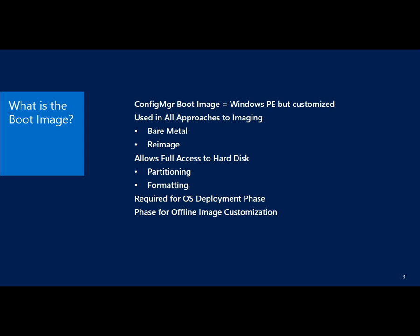Windows PE is very important to the imaging process — used in all types of imaging: bare metal, re-image. The very first phase of imaging is to get into Windows PE. In a re-image scenario, the first part might be to do some work in the existing OS, capture user state, whatever, but then we reboot into Windows PE because in Windows PE we have an OS running in RAM. We're not relying on the hard disk; the hard disk is not locked, making it available for partitioning, formatting, and injecting different material — full access to the hard drive.